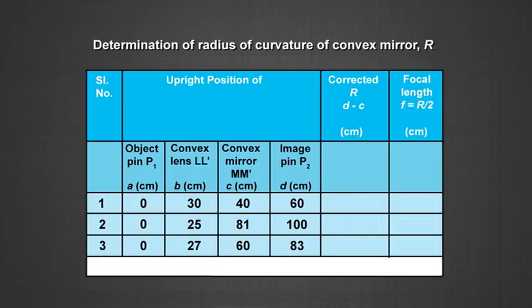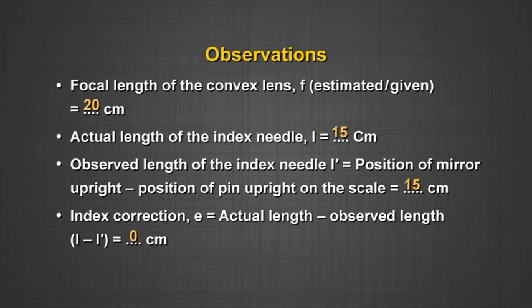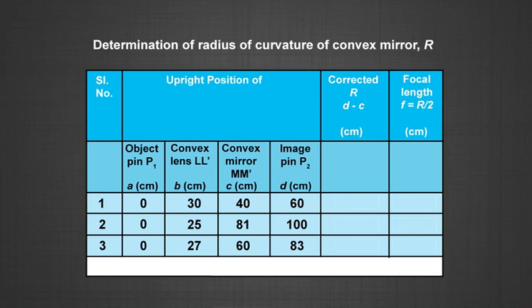Let us set up our observation table. The readings we will take are: position of the object pin, position of the lens, position of the convex mirror, and position of the image pin. First, record the focal length of the convex lens. Do the index correction to check if the uprights are vertical — if there is any error, account for it.